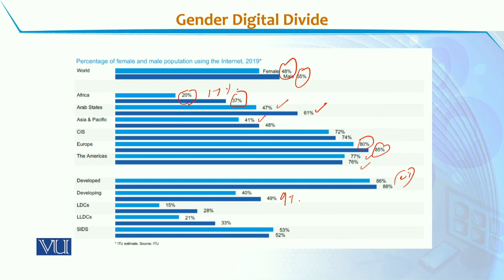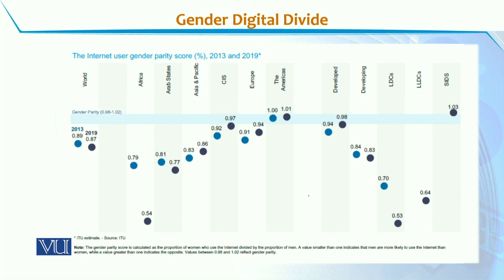So whether we look at this data on the global level, the developing or developed context, or by region, in all three contexts a disparity is visible. One score is calculated which is the gender parity score. If we look at this gender parity score, the ideal value is 0.98 to 1.02. If a region falls within this value, we can say that internet usage has achieved gender equality. But if we look at data across the world, only in the Americas in 2013 and 2019 did the gender parity score reach the ideal value.